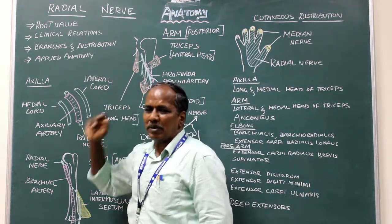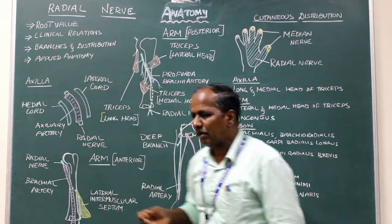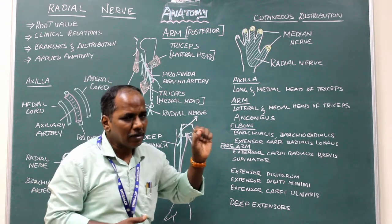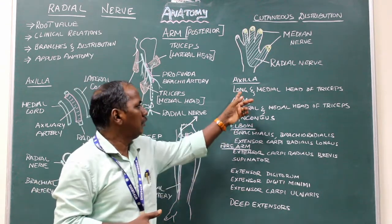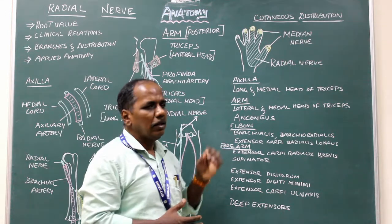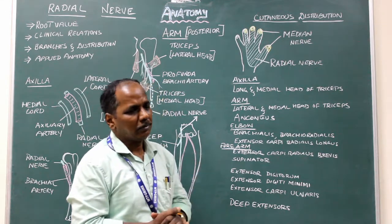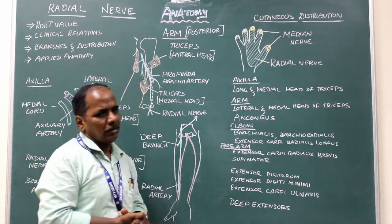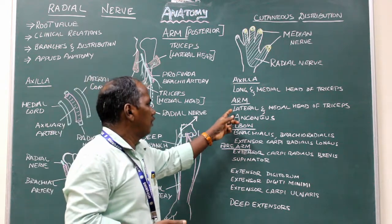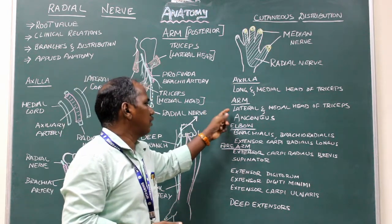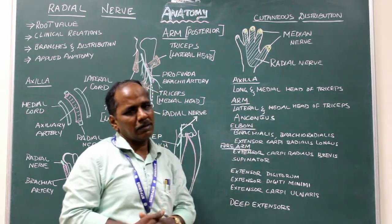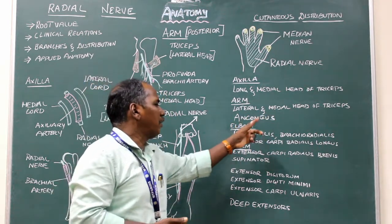Branches and distribution: In the axilla, it gives muscular branches to the long and medial heads of the triceps. In the arm, in the spiral groove, it gives branches to the lateral and medial heads of the triceps, and to anconeus.